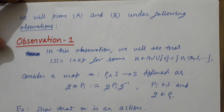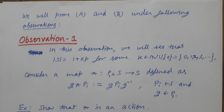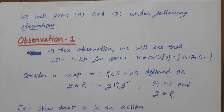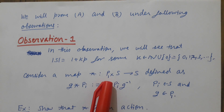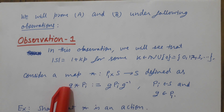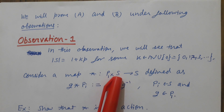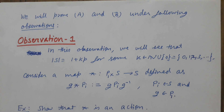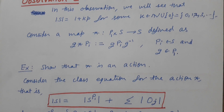We will prove both parts A and B under the following observations. Observation number one: consider a map ★ from P1 × S to S defined as follows — for any element g in P1 and Pi in S, define g ★ Pi = g·Pi·g⁻¹. It is easy to show that this map is an action; I leave it for you to verify.